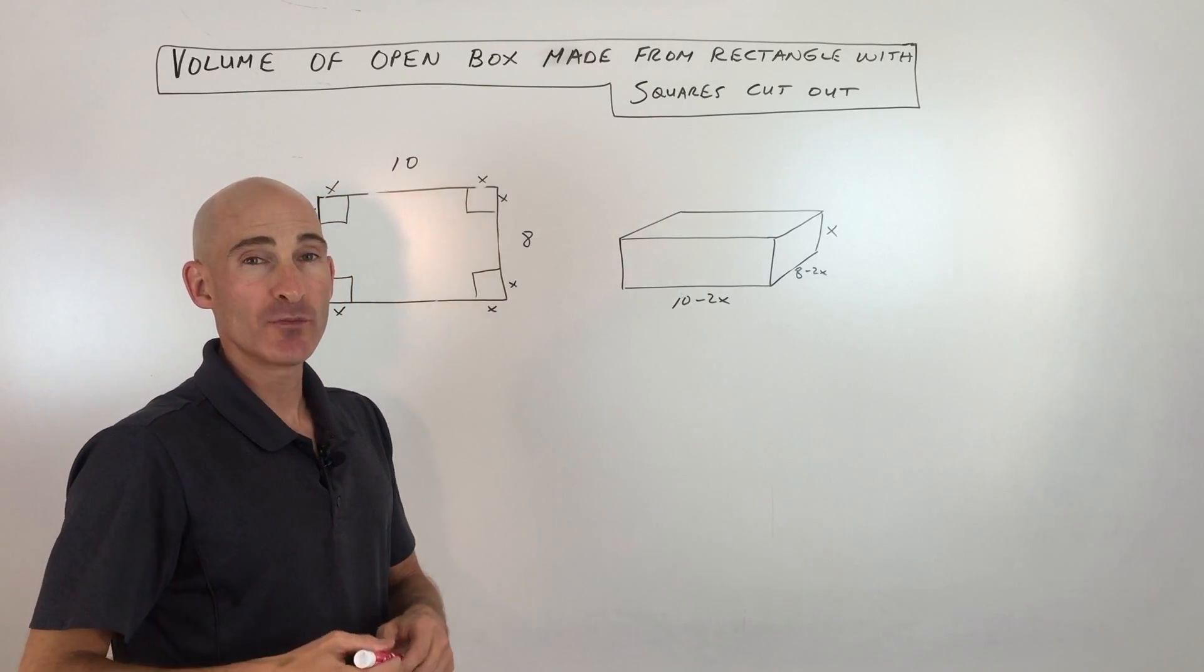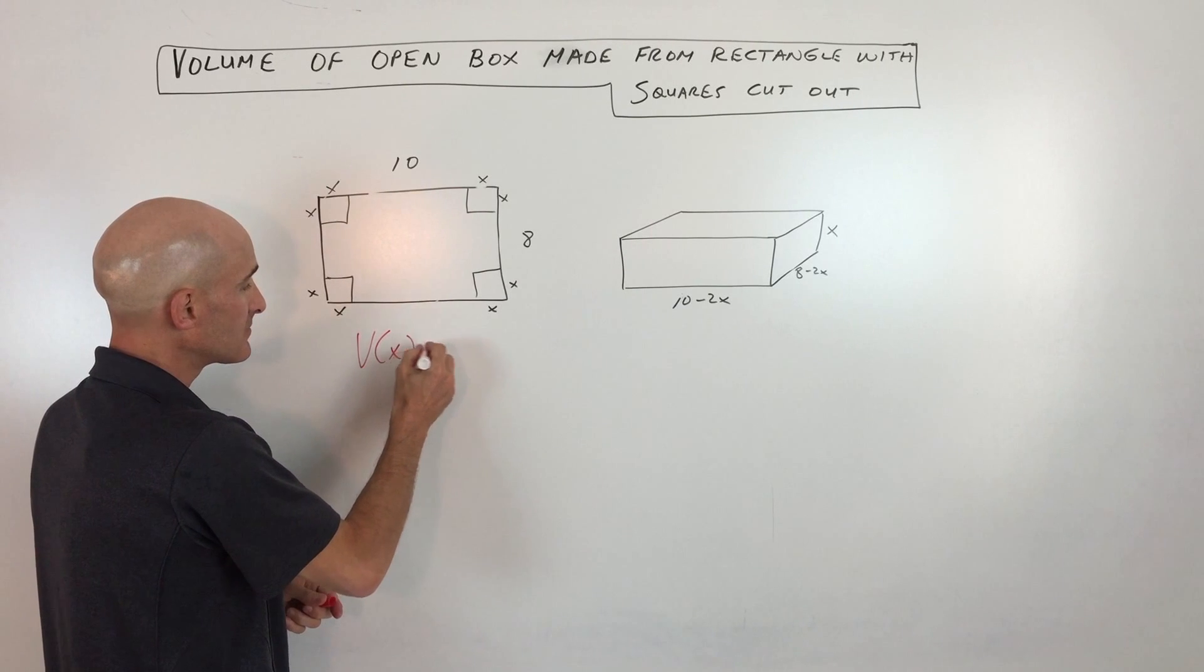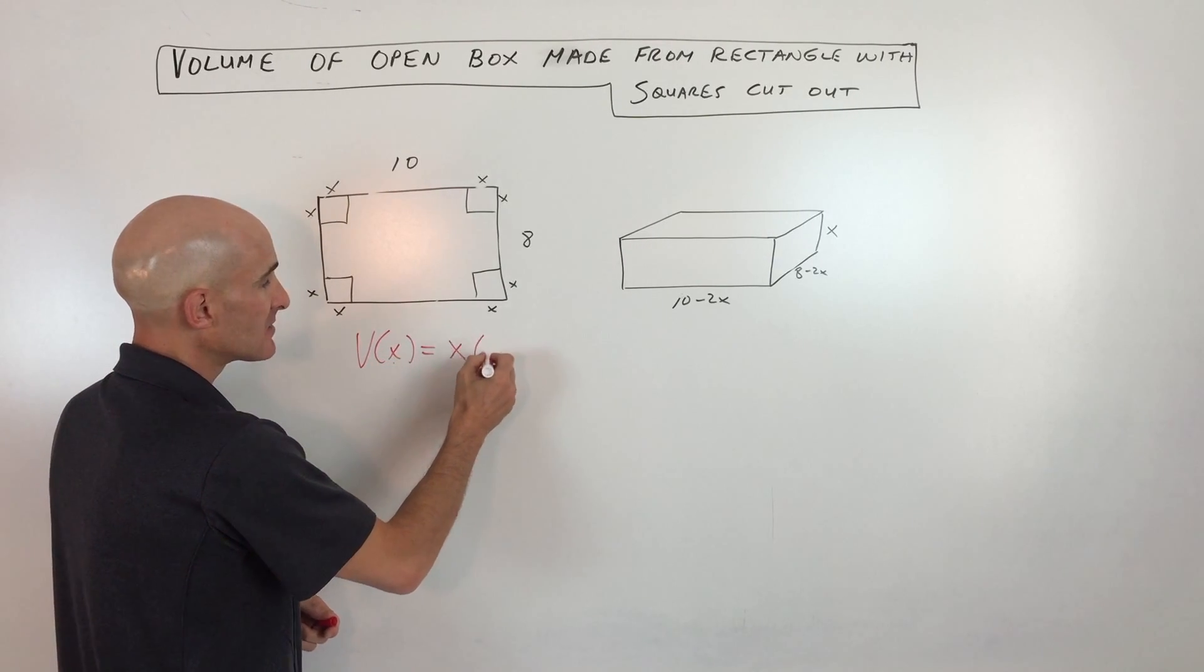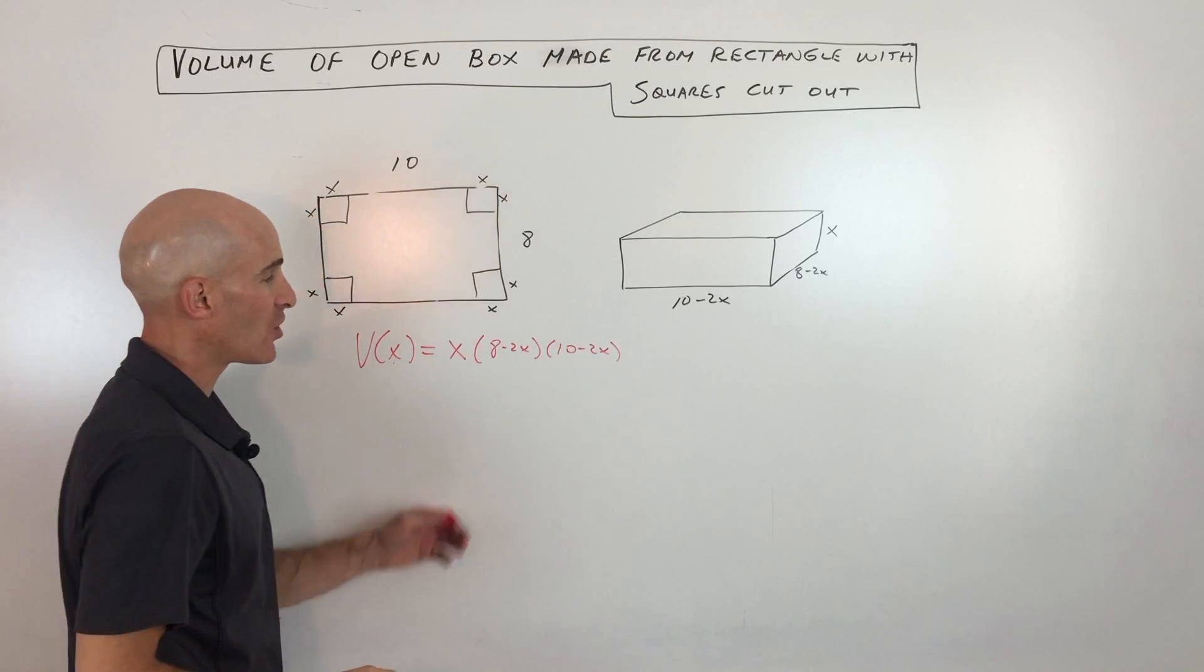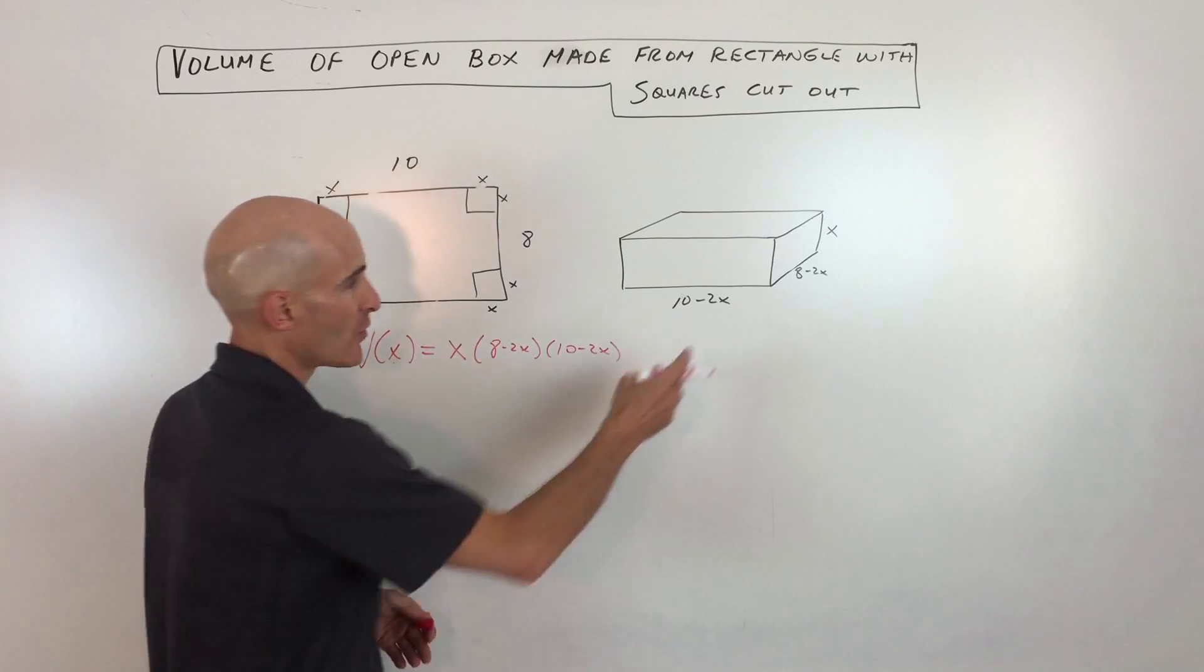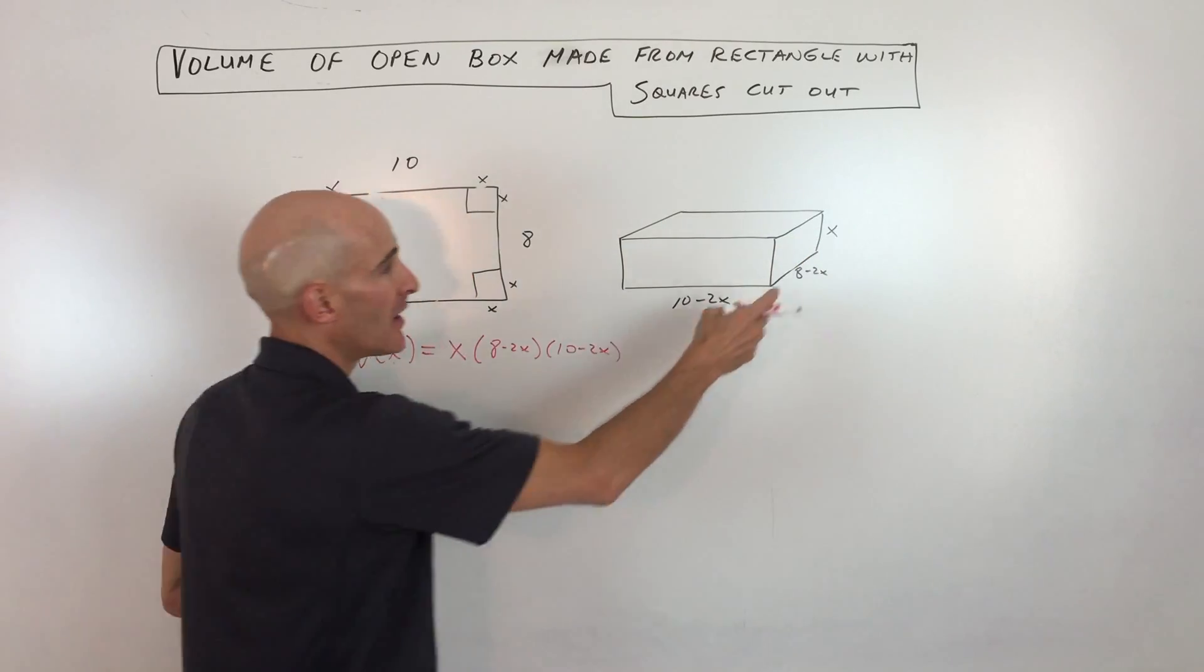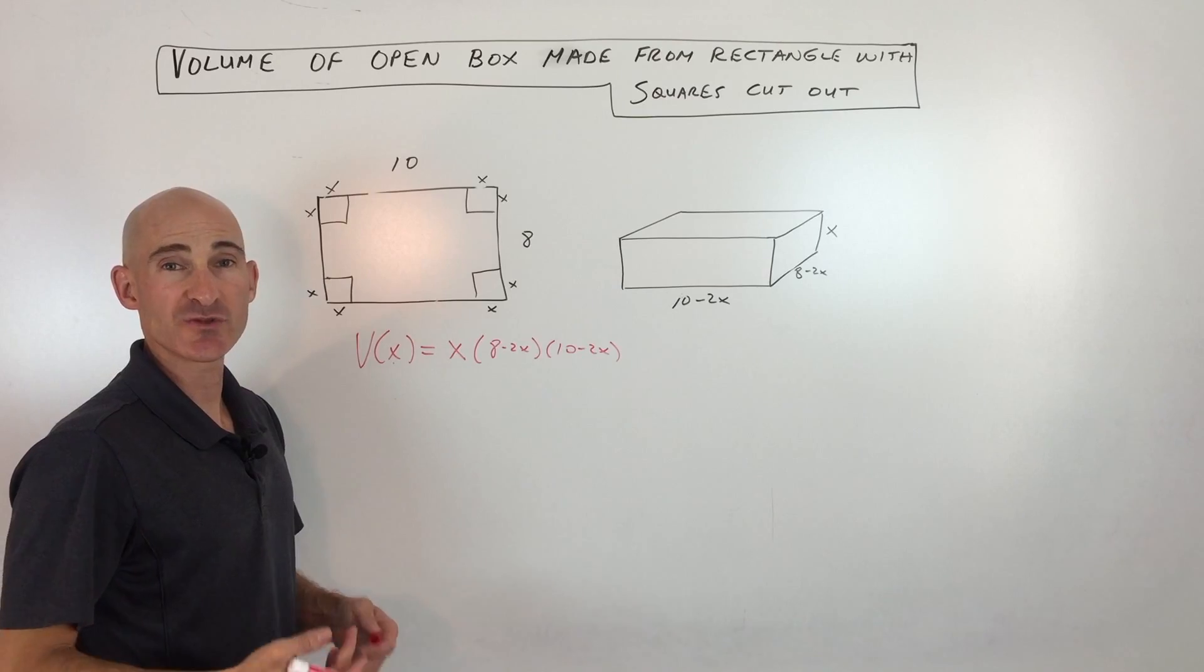So when you write the volume as a function of x, it looks something like this. V of x, the volume as a function of x equals x times 8 minus 2x times 10 minus 2x. So all it is is the length times the width times the height. Whether you want to call this one the length or this one the length, it doesn't really matter. But length times width times height is the volume of a rectangular prism or a box.